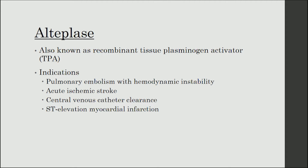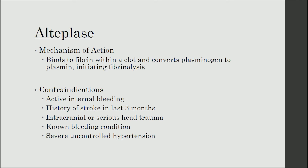After examining the evidence, we will now briefly discuss the thrombolytic agent most likely to be encountered in clinical practice: alteplase, also known as recombinant tissue plasminogen activator, or tPA. The indications for alteplase include pulmonary embolism with hemodynamic instability, acute ischemic stroke, central venous catheter clearance, and ST elevation myocardial infarction. The mechanism of action is that it initiates fibrinolysis by binding to fibrin within a clot and converting plasminogen to plasmin. Contraindications include any active internal bleeding, history of stroke within the last three months, intracranial or serious head trauma, any known bleeding condition, or severe uncontrolled hypertension.